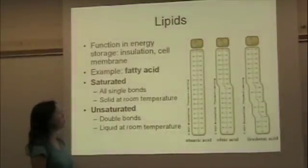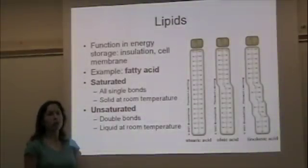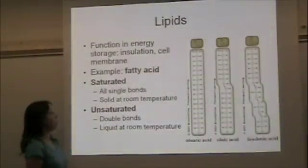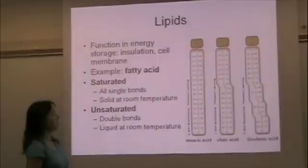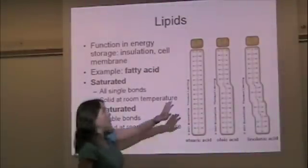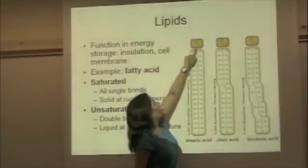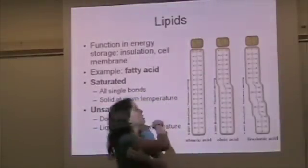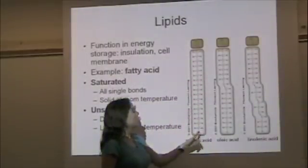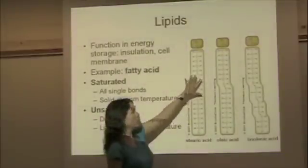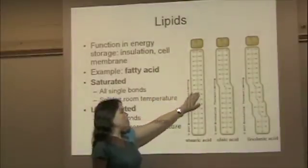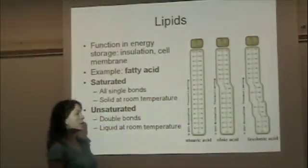Lipids are important in energy storage and act as insulation. They're also found in the plasma membrane, which surrounds all living cells. One example is a fatty acid. Fatty acids have a characteristic carboxyl head — a carbon double bonded to an oxygen and single bonded to an OH — and then a long tail that is only carbon and hydrogen. This head region and long carbon-hydrogen tail is characteristic of fatty acids.